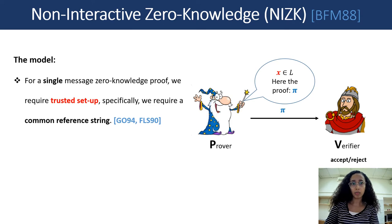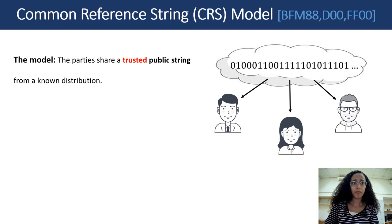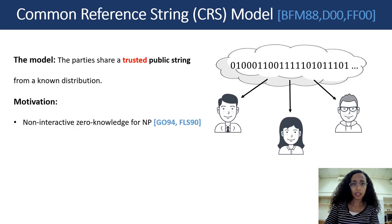What is the common reference string model? In the CRS model, the parties share a trusted public string from some distribution. You can think about this string as a public encryption key or a commitment to some bits, etc. The motivation to define this model is to achieve cryptographic primitives that we cannot achieve without this assumption — for example, non-interactive zero-knowledge for NP, malicious two-party MPC, and more.